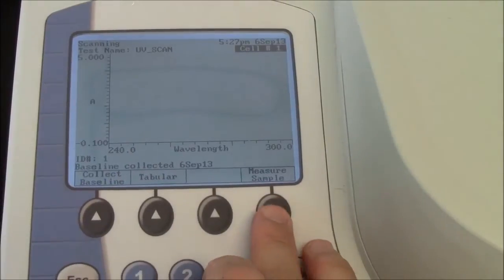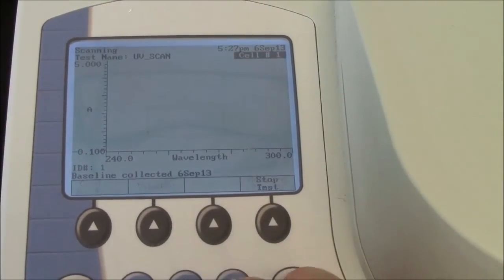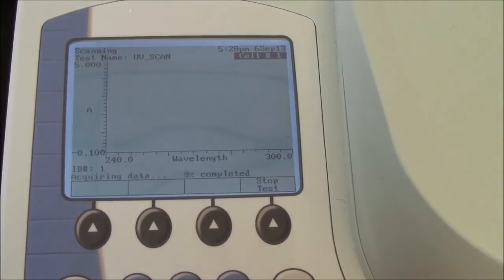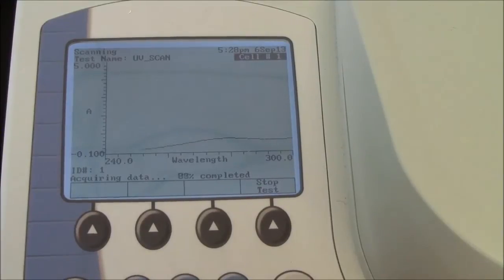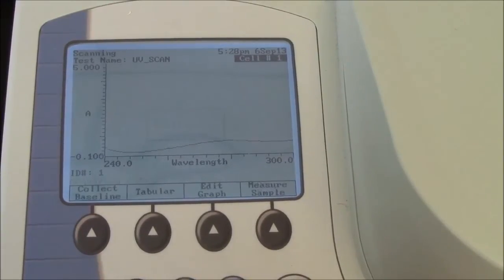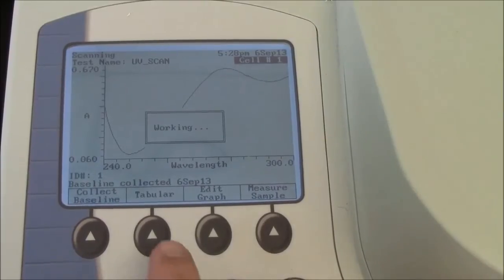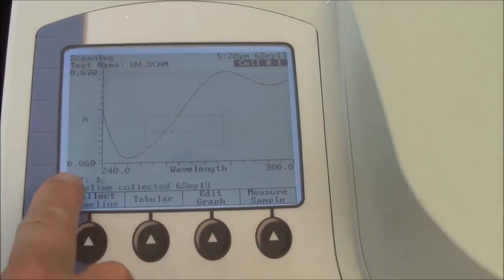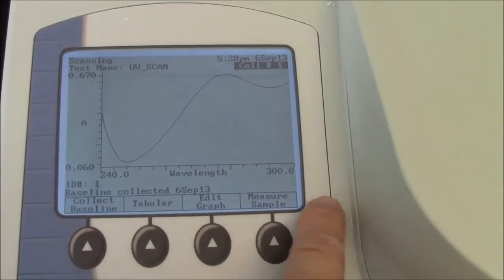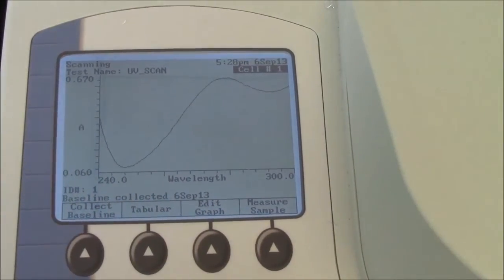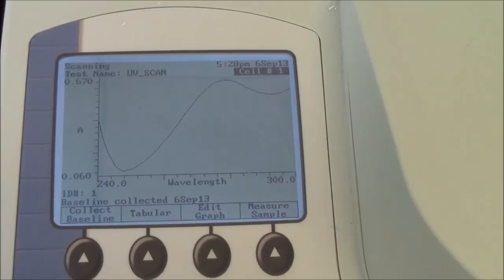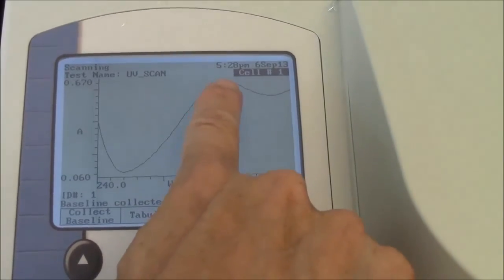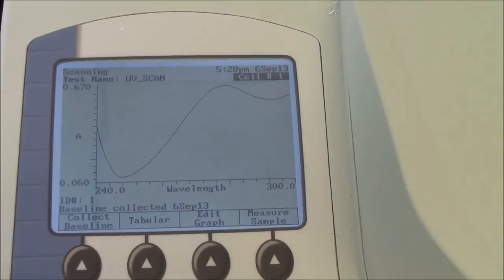I press measure sample. And I'm getting now a graph of absorbance on this y-axis versus wavelength on the x-axis. I have an interesting spectrum with one major peak here. And it looks like there would be a peak at a lower wavelength and there would be a peak at a higher wavelength as well.